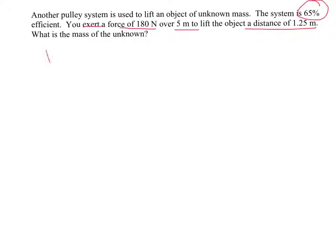That's going to give us the work in. The work in is our force times the distance that we exert it. So 180 times 5, that's going to give us 900 joules as our work in. We know the efficiency that was given to us is 0.65. So then we've got to go from there.